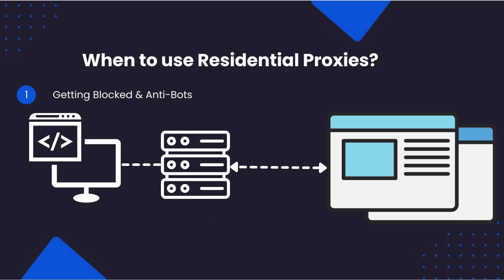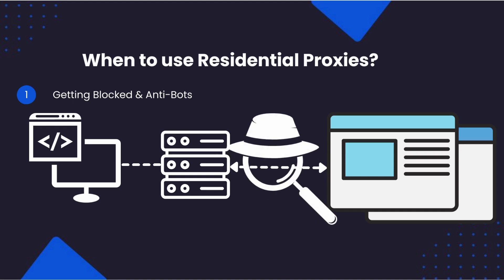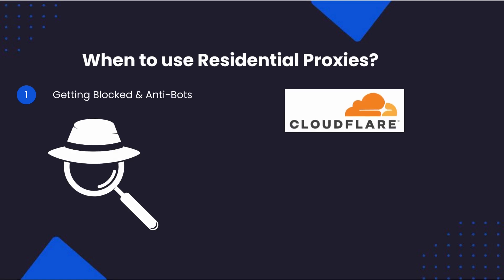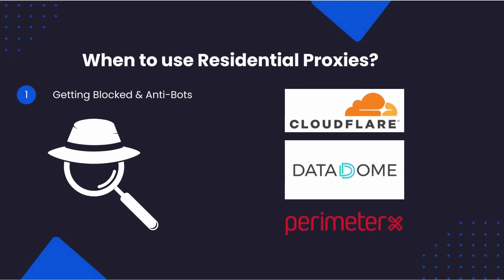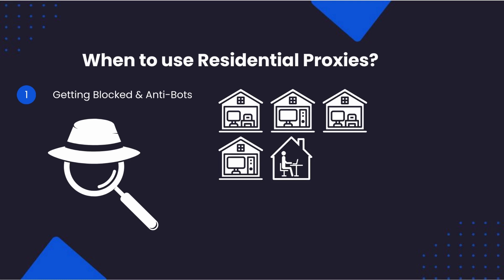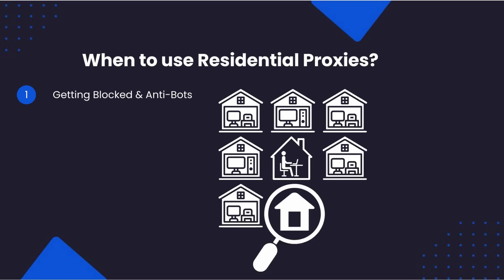The number one reason why you should consider using residential proxies over data center proxies is when your data center proxies are continuously getting blocked by the website you're trying to scrape. Businesses are increasingly using more sophisticated anti-scraping technologies like Cloudflare, Datadome, and PerimeterX to detect and block scrapers. These technologies use request and behavior profiling techniques to ban requests from certain IPs. The advantage of residential proxies is that it makes it much harder for these technologies to determine if a request is coming from a scraper or an ordinary user, so success rates are typically much higher.